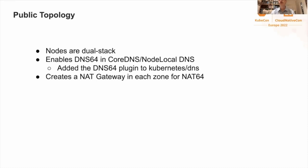My name is John Myers, and I work at Proofpoint. At Proofpoint, we are particularly interested in how IPv6 can solve problems with local IP address allocation. KOPS initially implemented IPv6 using public topology because it is simpler. In public topology, all nodes are dual stack and accessible from the public internet. In order to allow non-host network pods to connect to IPv4 targets, we enabled DNS64 in CoreDNS and the local DNS, submitting a PR to Kubernetes DNS to add the DNS64 plugin. KOPS creates a NAT gateway in each zone in order to perform the NAT64.